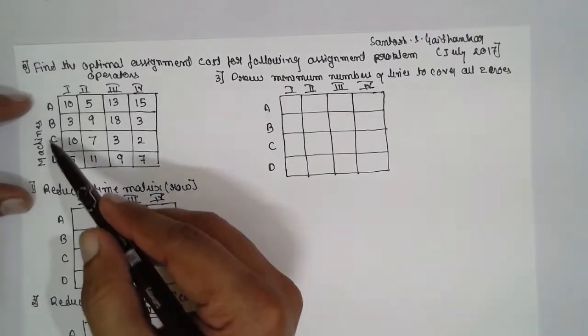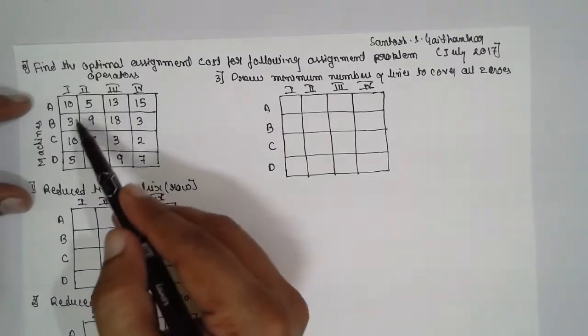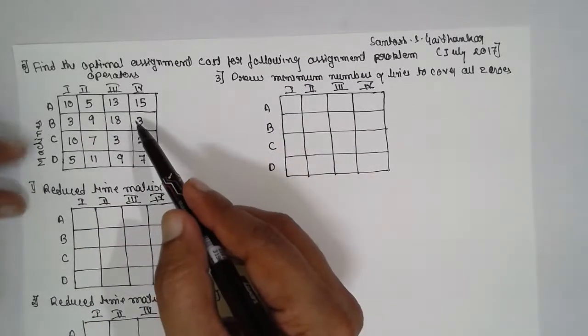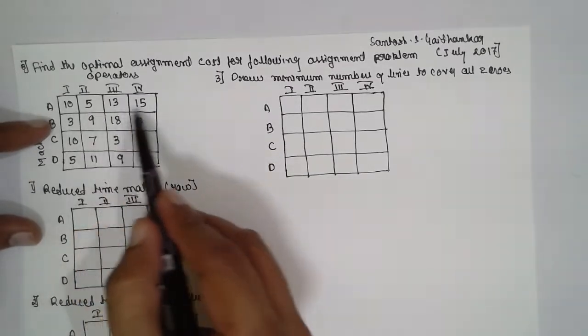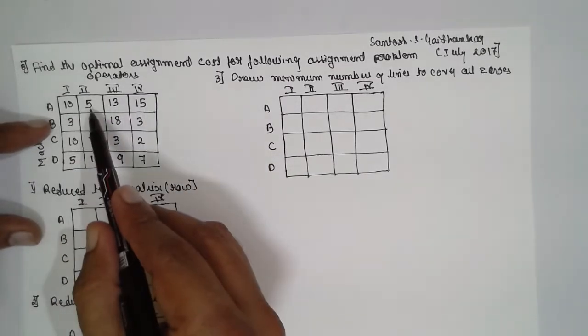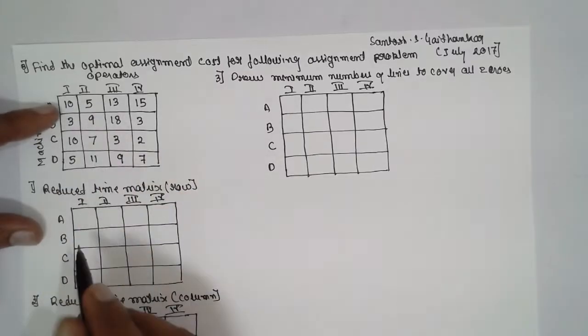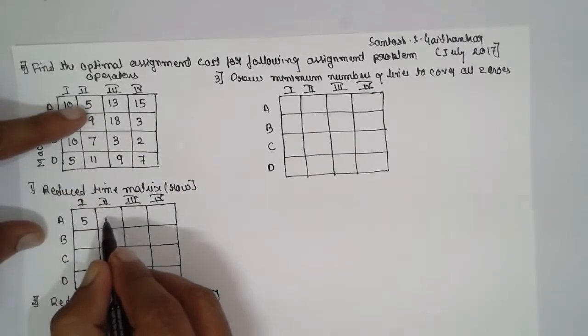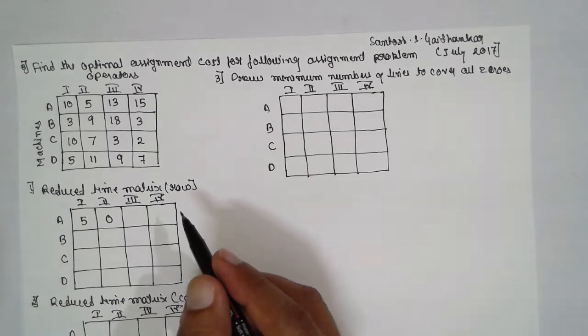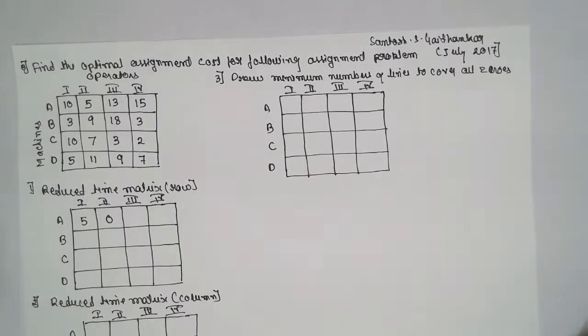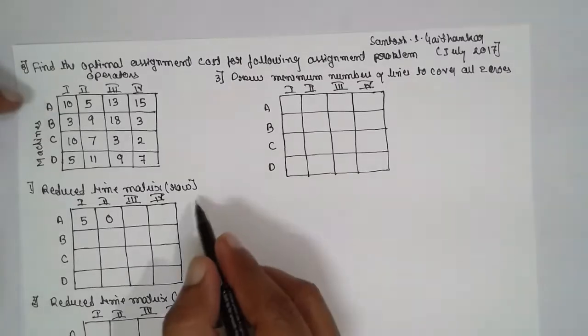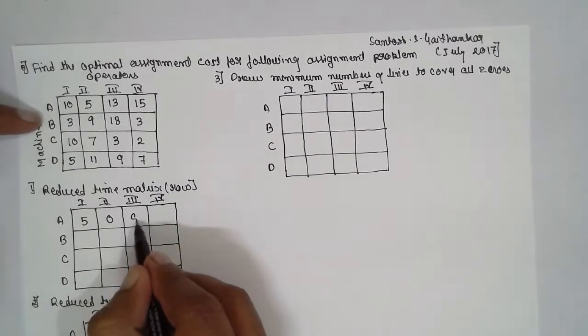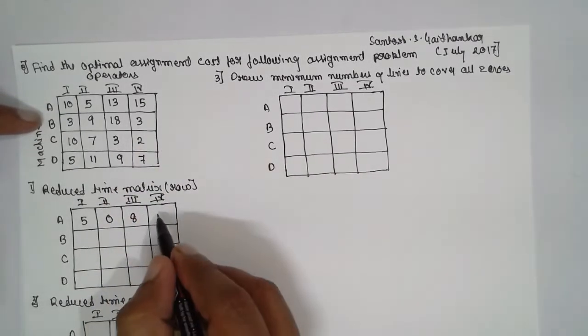Now this is the problem they have given. The machine and operator. These are the cost they have mentioned. First, reduce the time matrix row wise. That means you have to select the minimum value in the row. Minimum value is 5 here. Consider 5: 10 minus 5 is 5, 5 minus 5 is 0, 13 minus 5 is 8, 15 minus 5 is 10.